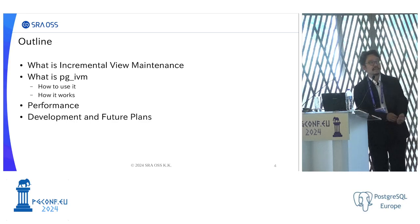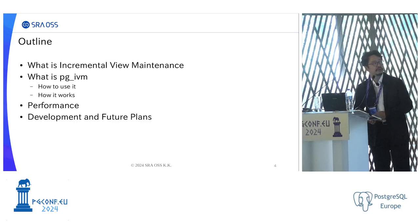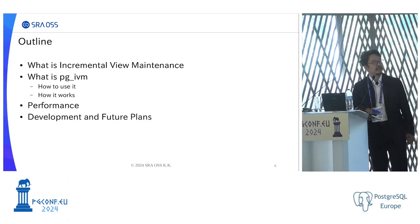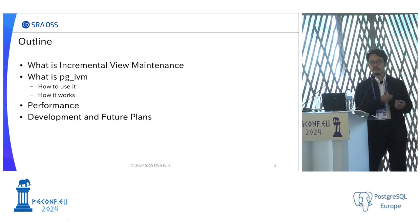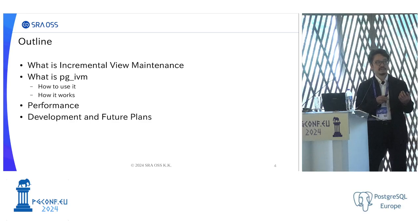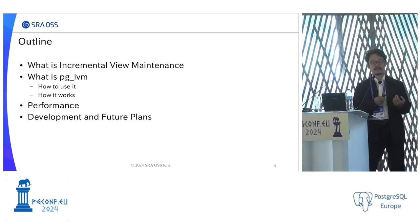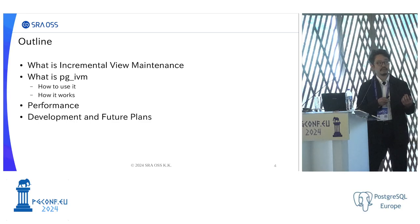This is the outline of this presentation. First, I'll introduce what incremental view maintenance is. Then I'll introduce PGIVM — what it is, how to use it, how it works, and how it is implemented. Next, I'll show some simple performance evaluation results. And finally, I'll talk about the development of PGIVM and some future plans.